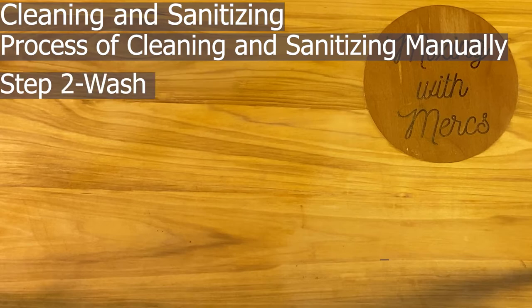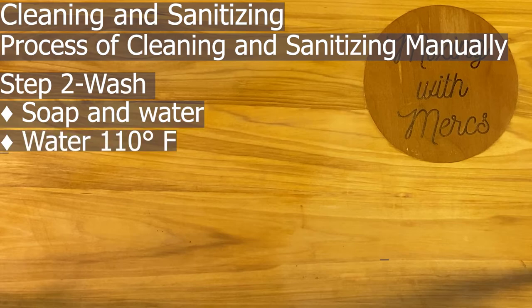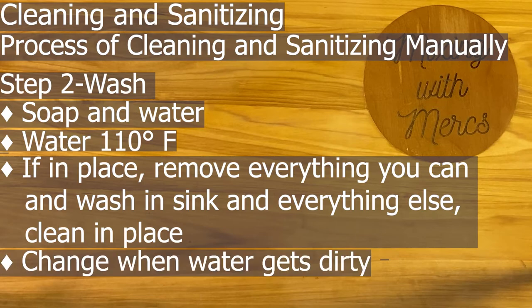The next step is to wash, and there are a few guidelines. You use soap and water — typically dishwashing soap. The water needs to be about 110°F, whether you're cleaning in-place equipment or in the sink. For in-place equipment, take off any removable parts and wash those in the sink; anything else you clean in place. If your water looks dirty, it's not getting your dishes clean, so change it out whenever it gets dirty.